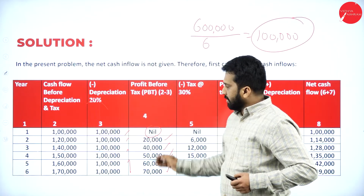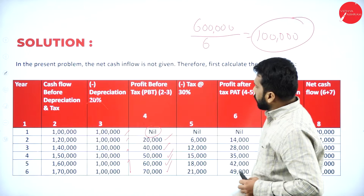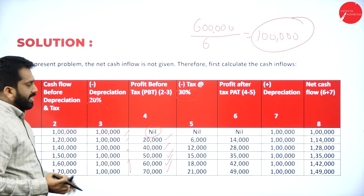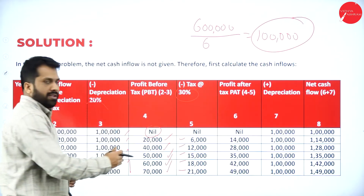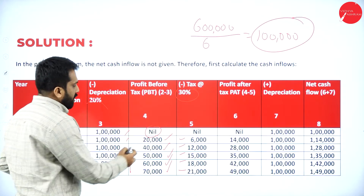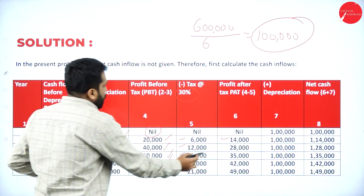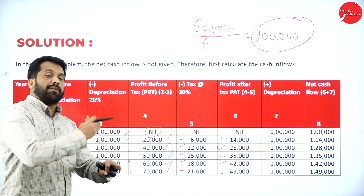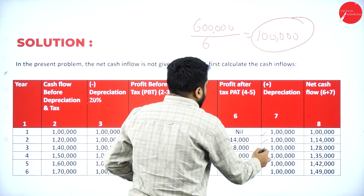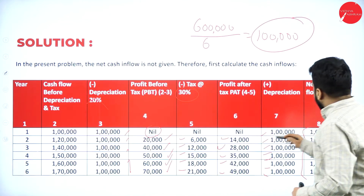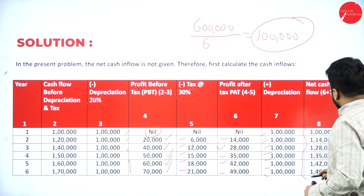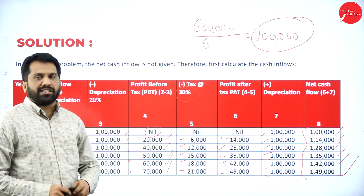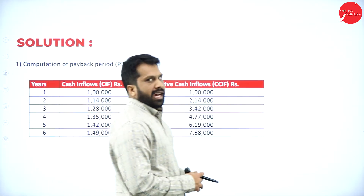Now calculate thirty percent tax. On nil it will be zero; on twenty thousand it will be six thousand; and so on for the remaining years. After deducting tax, we get profit after tax. Then add back depreciation — the one lakh we had already deducted. So net cash flows come to: one lakh, one lakh fourteen thousand, one lakh twenty eight thousand, one lakh thirty five thousand, one lakh forty two thousand, and one lakh forty nine thousand.